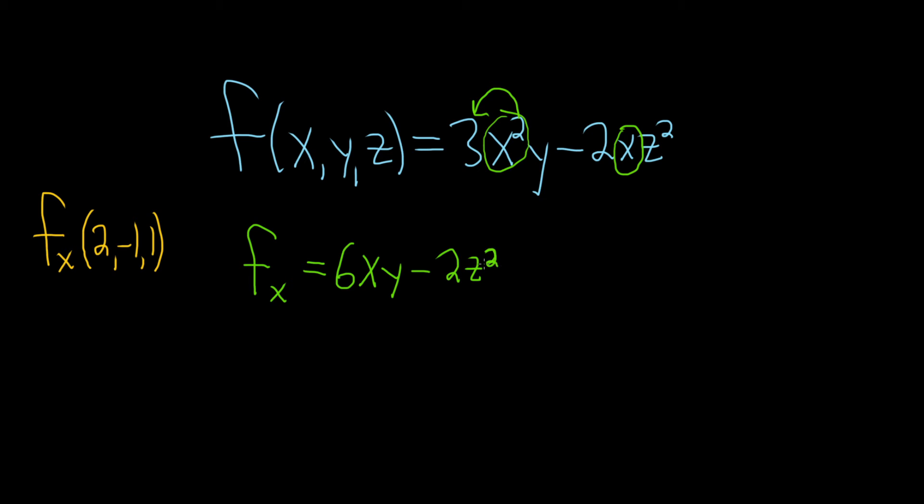Now all we have to do is plug in our numbers. So the partial with respect to x at 2, negative 1, comma 1 is equal to, let's see, so it's 6 times 2. That's our x. Our x is 2. Our y is negative 1. It's really easy to mess up here. So x, y, z, yep.